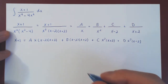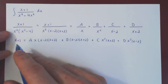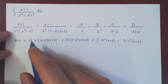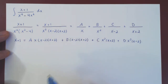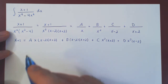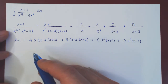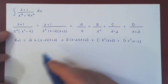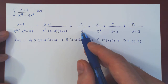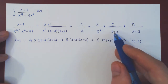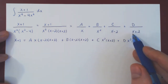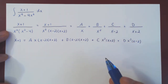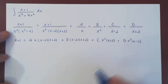We try to choose values of x that eliminate every coefficient but one. We can use x equals 0, x equals 2, and x equals negative 2 — this will return three of the four coefficients.